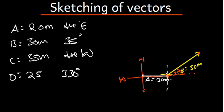We've been told that vector C is due west. So making another x-y plane: north, east, south, west. Due west means the vector lies in the west direction. It's 35 meters — a bit longer than vector B. We draw it going that way and end there.